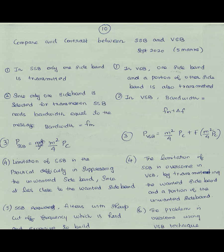Comparing SSB and VSB: In SSB, only one sideband is transmitted. In VSB, one sideband plus a trace (vestige) of the other sideband is also transmitted. Since only one sideband is selected for transmission, SSB needs bandwidth equal to the message bandwidth, i.e., BW = fm. For VSB, bandwidth = fm + ΔF, where ΔF is the width of the vestigial portion of the sideband.